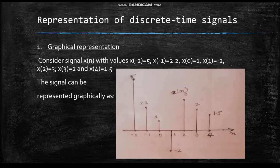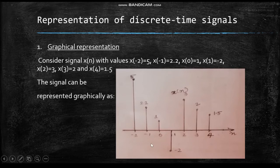Consider a signal x(n) with values: x(−2) = 5, x(−1) = 2.2, x(0) = 1, x(1) = −2, x(2) = 3, x(3) = 2, and x(4) = 1.5. It is represented graphically where at n = −2 the value is 5, at n = −1 it is 2.2, at n = 0 it is 1, at n = 1 it is −2, at n = 2 it is 3, at n = 3 it is 2, and at n = 4 it is 1.5.